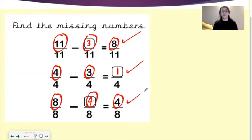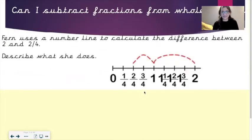Very well done for carrying on with me so far. You're doing fantastic. Now, a worded question. Fern uses a number line to calculate the difference between 2 and 2 quarters. Describe what she does.